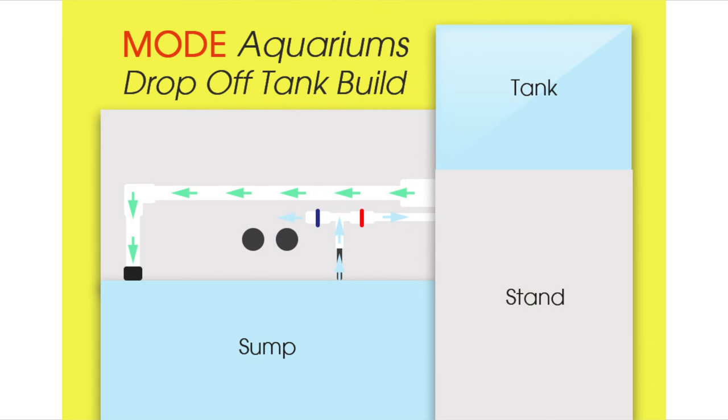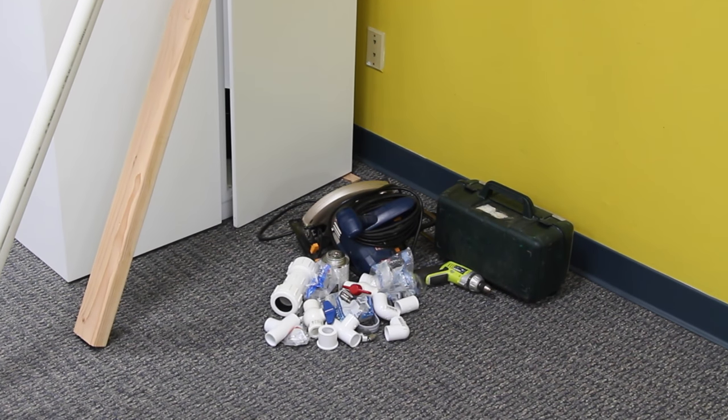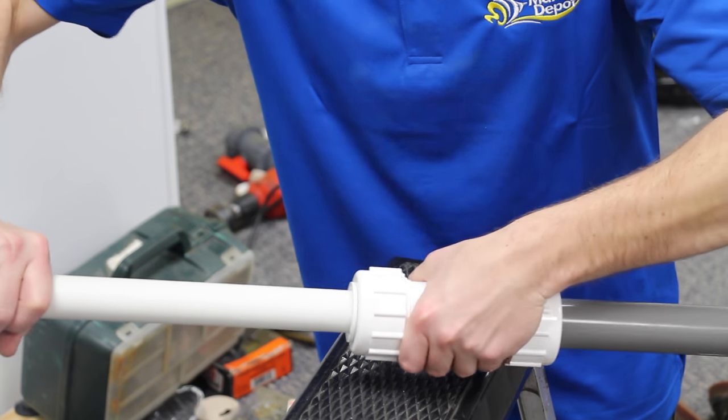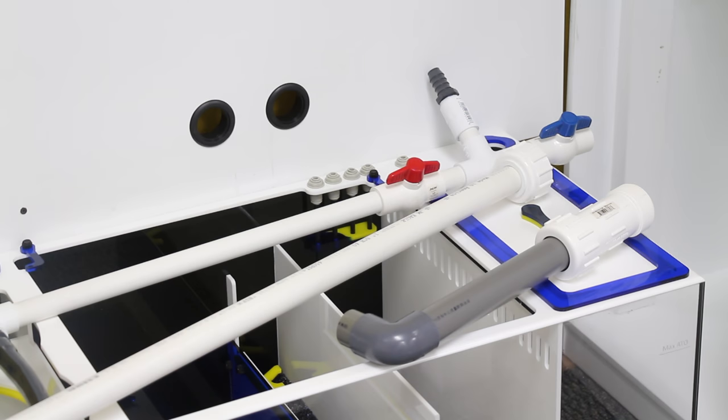After mapping out the plumbing we gathered all the parts we would need and cut all of the pipes to size. We assembled all of the plumbing without glue for a dry fit. This helps us to ensure that when we do apply the glue all the fittings and pipes are set correctly.